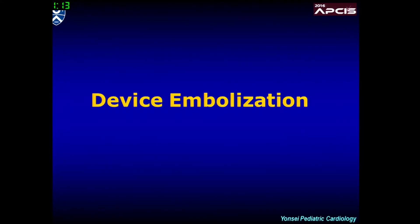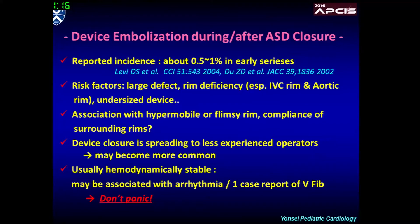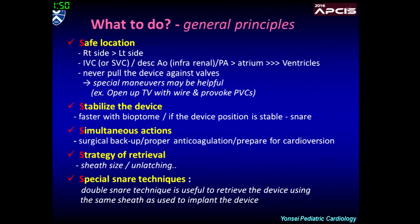The first topic is device embolization. Device embolization during or after ASD closure procedure has been reported to occur in 0.5 to 1% in early series. Several risk factors have been suggested, including large size of the defect and rim deficiency, especially in the IVC rim. An embolized device can be retrieved in the cath lab without significant adverse events in many cases; otherwise, it should be retrieved surgically with concurrent closure of the defect. In case of device embolization, stabilizing the device in a safe location is the first thing to do.